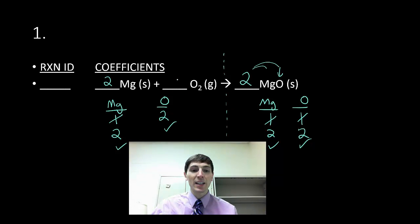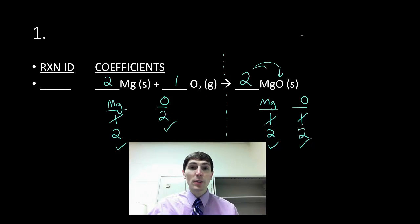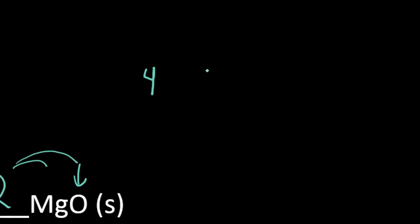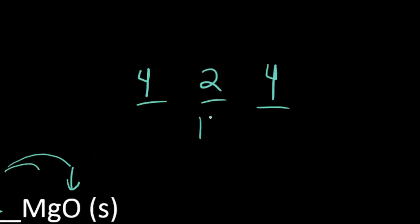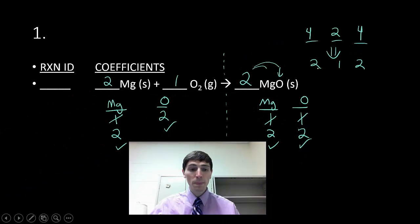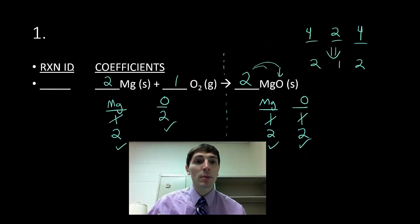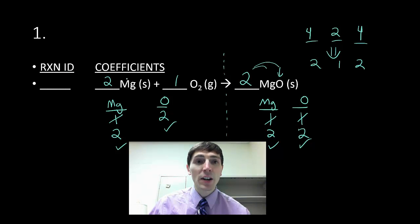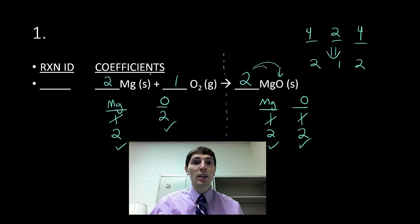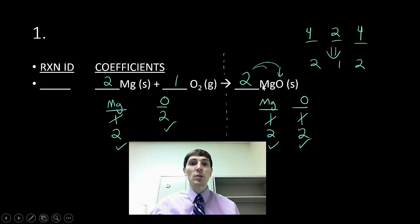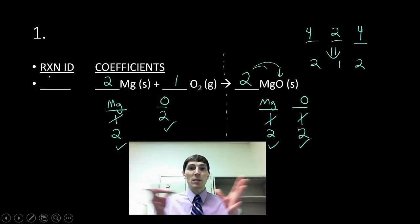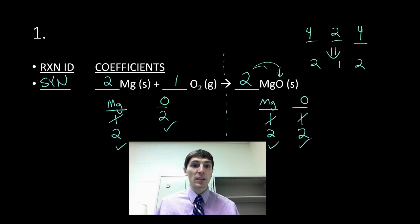Step four is to place a one in any empty coefficient location, and then reduce all to the lowest whole number ratio if needed. For example, if I ended up with coefficients of 4, 2, 4, I would need to reduce that down to 2, 1, 2. We're looking for the simplest recipe. The last part is the reaction ID. Looking here, I have two elements combining together — whenever lesser compounds combine into fewer compounds, we call this a synthesis reaction. We're taking many ingredients and making fewer things.